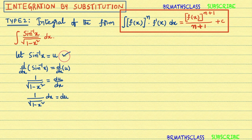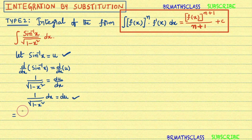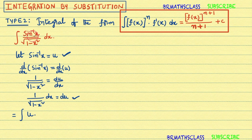Observe these two substitutions: sin inverse x equals u, and 1 divided by root over 1 minus x square into dx equals du. Substituting into the given integral, sin inverse x becomes u, and 1 divided by root over 1 minus x square dx becomes du. So the integral becomes integral of u du.